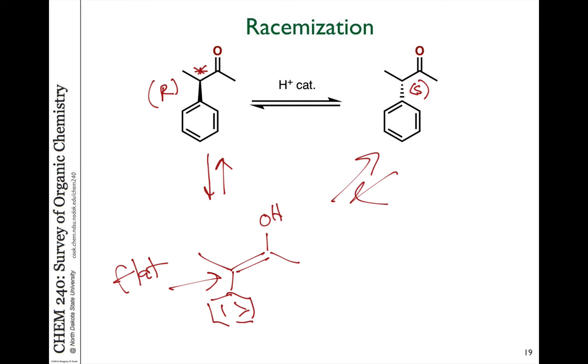So what we do is if we take pure R isomer, expose it to an acid catalyst, what we end up with is a 50-50 racemic mixture of these relatively quickly. And that's because it's going through the intermediate enol, which loses the stereochemistry information.